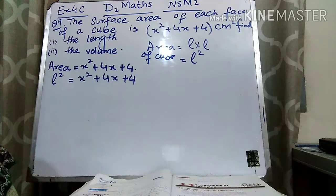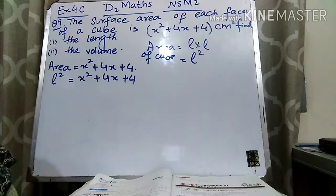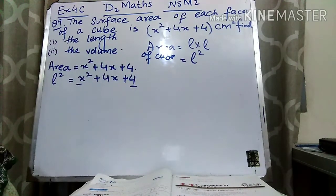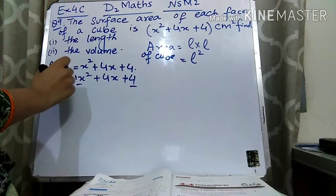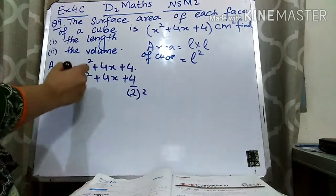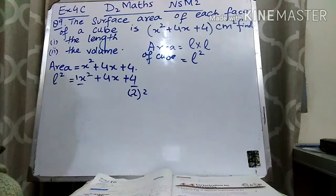Now we will use the methodology which is called completing the square. You have also solved questions related to completing the square in exercise 4B, so keep that concept in mind. Remember that for completing the square, the first and the last numbers should be perfect squares. Here the first term coefficient is 1, which is a perfect square of 1, and 4 is the perfect square of 2. So these two are perfect squares and we can use the completing the square method.